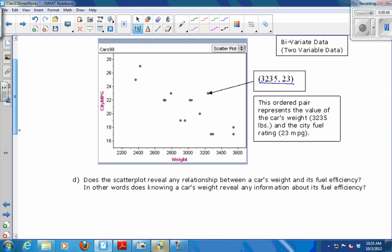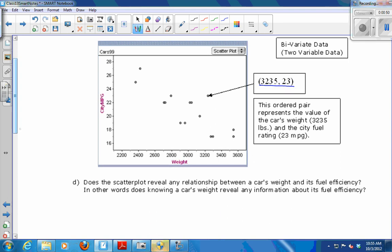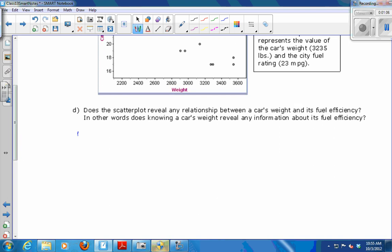So do you think that this scatter plot shows a relationship between a car's weight and its fuel efficiency? Yeah. What's the general trend? Yes, the more it weighs, the lower the gas mileage. Greater weight means less miles per gallon.